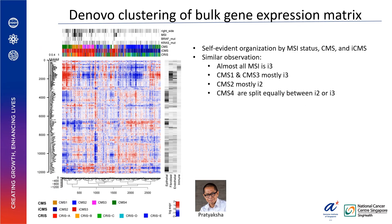Next, we combined the bulk transcriptome into a single gene expression matrix and performed de novo clustering. We again found a self-evident organization by MSI status, CMS, and ICMS, which supports that they might provide the underlying structure to the molecular classification of CRC. We also observed that most MSI tumors are immune infiltrated, indicated by high expression levels of immune cell genes. Most CMS4 tumors are enriched for fibroblast and endothelial cells. And again, we found that CMS4 is split into two separate groups depending on their ICMS status, which might suggest that epithelial subtype and fibrosis are decoupled.